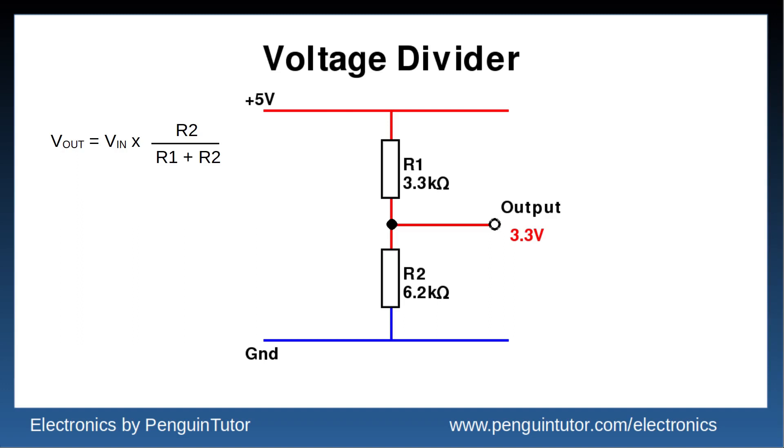Having too high resistor values can make the circuit more susceptible to noise. I usually use a value of around 10 kilo ohms, which gives about half a milliamp of current.